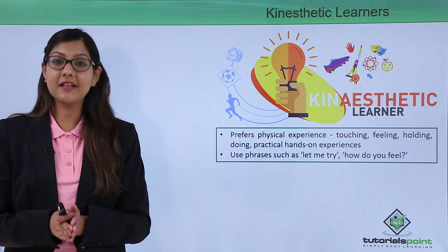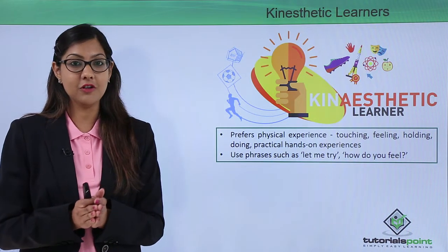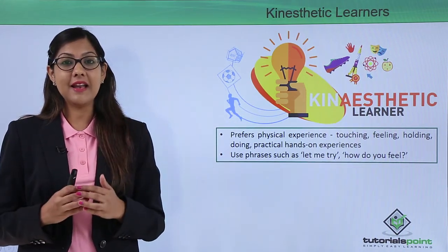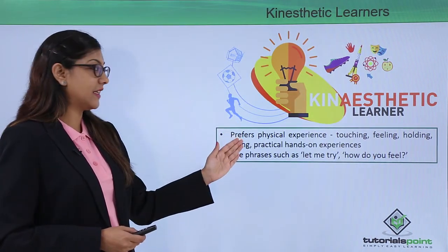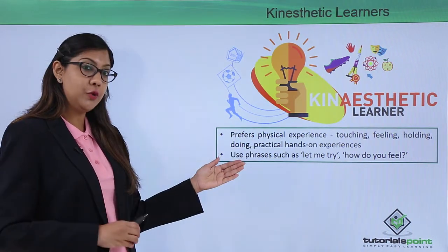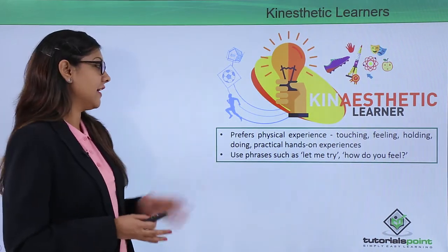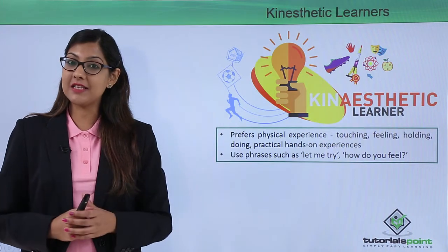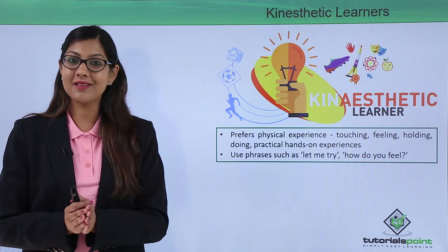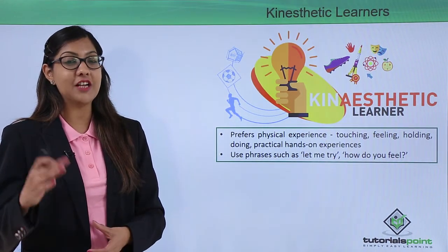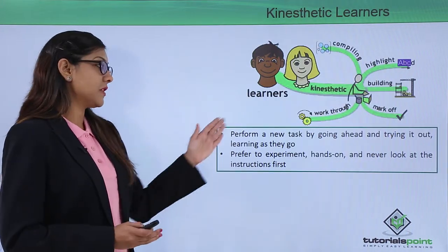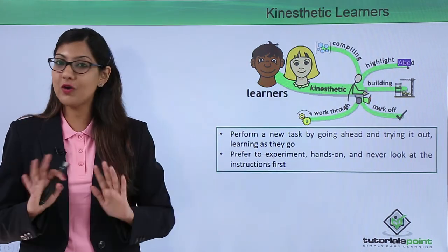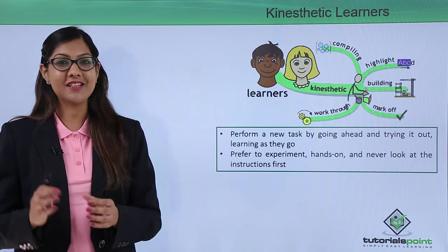The next kind of learner is the kinesthetic learner — someone who likes to touch and feel an activity, and that is how they learn best. They don't prefer to visualize or hear; they prefer hands-on activity. They prefer physical experience: touching, feeling, holding, doing. They use phrases like 'let me try' or 'how do you feel?' A kinesthetic learner would tell the teacher 'let me try doing that.' They perform a new task by going ahead and trying it out, learning as they go. They prefer to experiment and never look at instructions — they like to do things practically.